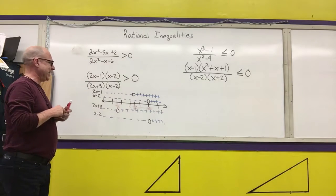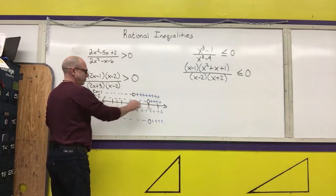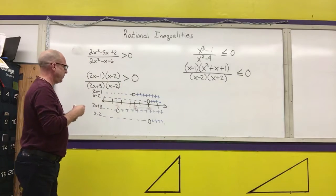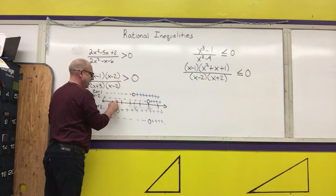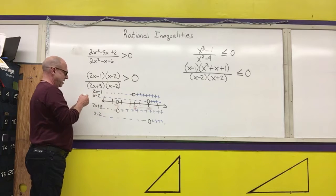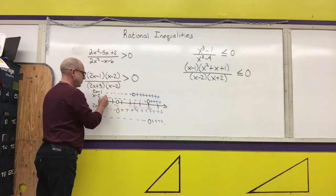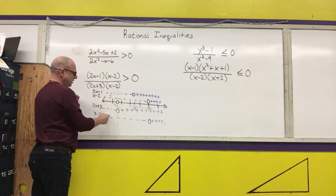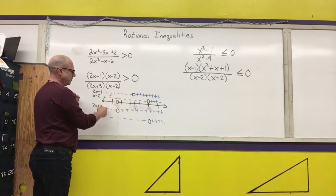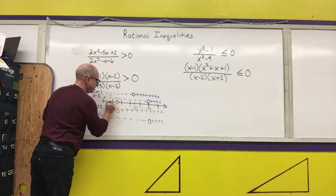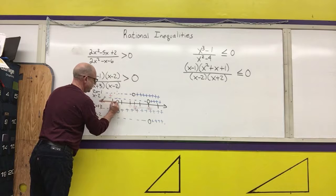Now I want to analyze each region of the number line and figure out whether I'm positive or not. For the first region, to the left of negative three-halves: a negative times a negative is a positive, so this gives me a positive in this region. A negative times a negative is a positive; a positive over a positive is a positive. And a positive is greater than zero, so everything in this infinite region is greater than zero.